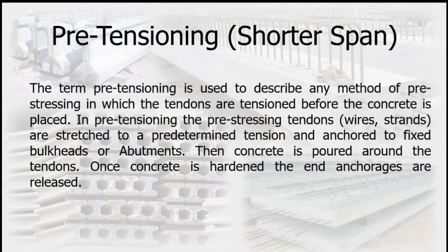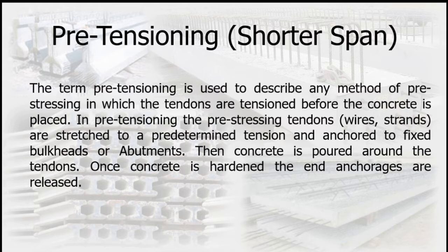Pre-tensioning — shorter span. The term pre-tensioning describes any method of pre-stressing in which the tendons are tensioned before the concrete is placed. The pre-stressing tendons — wires and strands — are stretched to a predetermined tension and anchored to fixed bulkheads or abutments. Then concrete is poured around the tendons, and once the concrete is hardened the end anchorages are released.